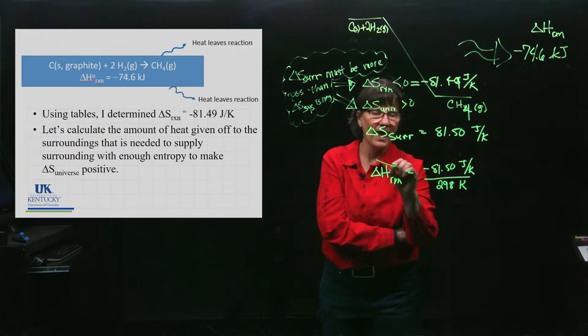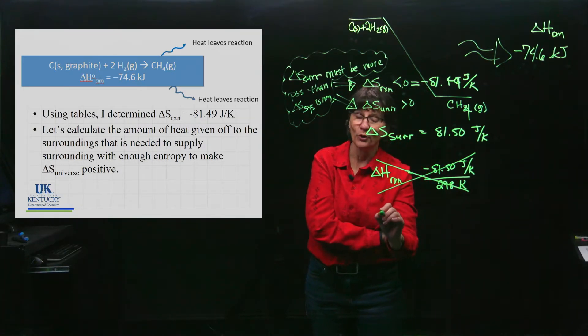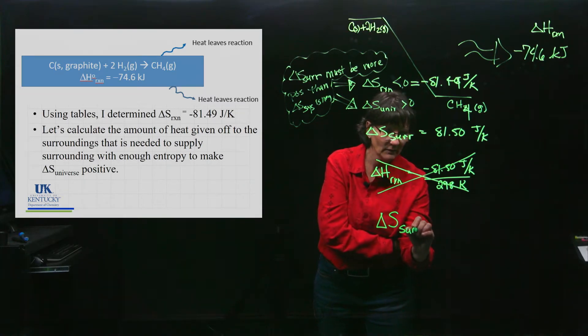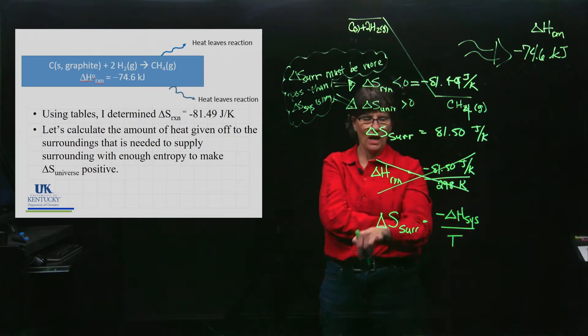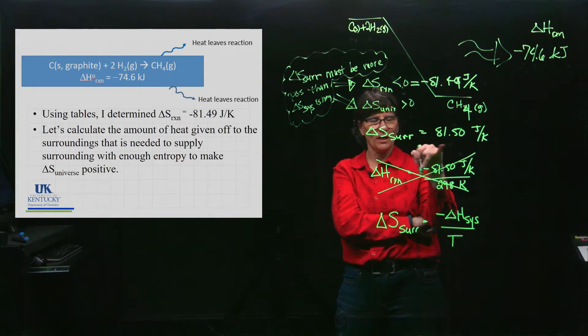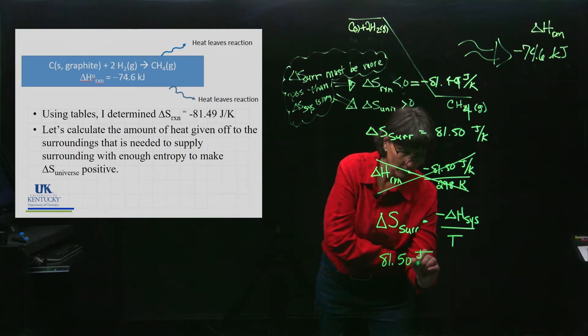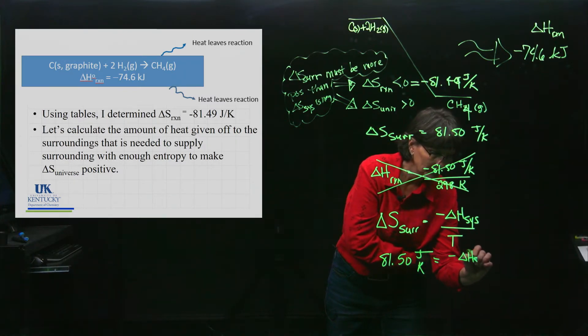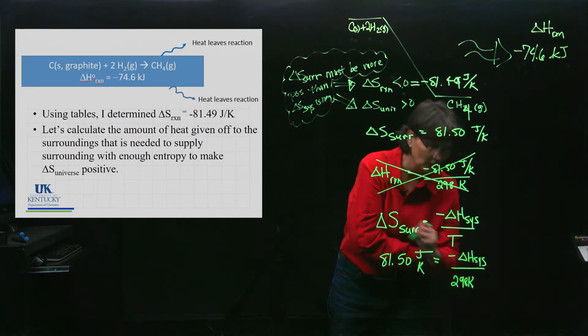Alright class, we're going to back up the tape and try this again. The ΔS of the surroundings is equal to negative ΔH of the system divided by temperature. I know I need this much for my surroundings. I'm going to pick a temperature of 298 Kelvin, room temperature.